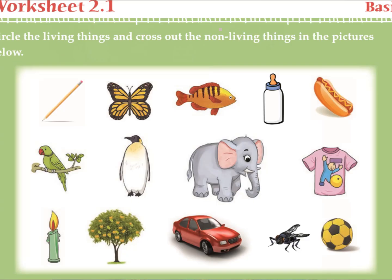As usual, I always give you a small task. Today also there is a small task for you — it's very easy. In the screen, you can see there is one column. Circle the living things and cross the non-living things. Below there are some pictures — parrot, pigeon, tree, car, insect, ball, feeding bottle, needle, and many more. You need to cross the non-living things and circle the living things. I believe you understood this chapter. In the upcoming chapter, we will see the different features and characteristics between living things and non-living things.